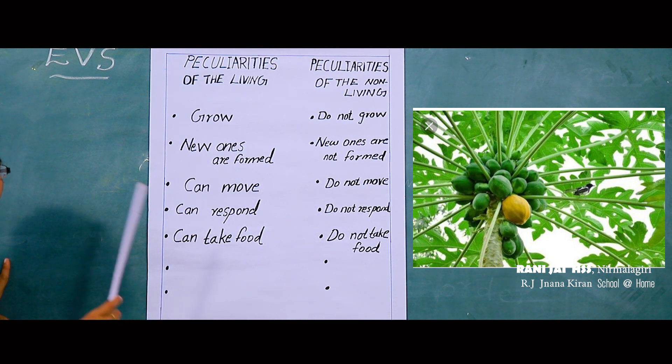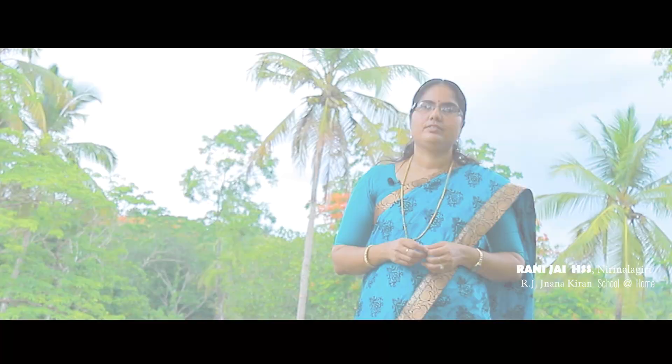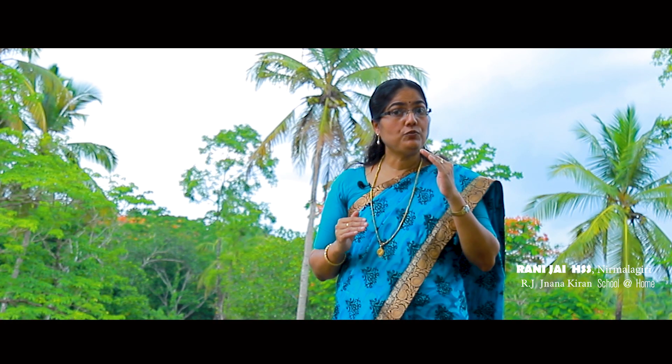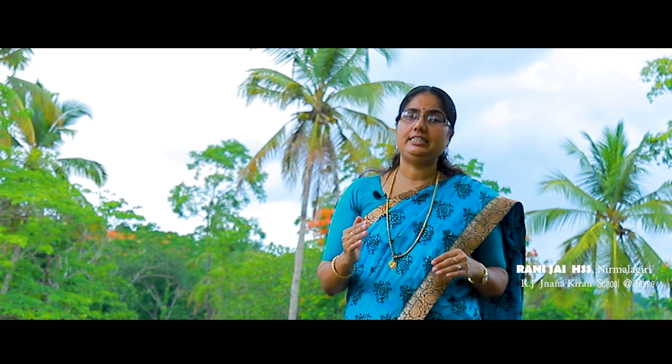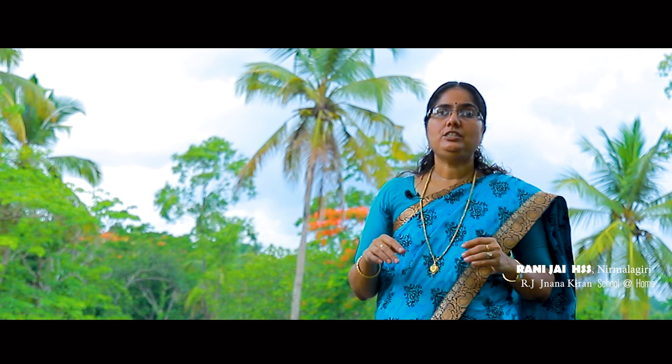Food is required for the growth of all living things. Just as we cook food in our kitchen, plants prepare their food in their leaves. The prepared food is used for their growth. The remaining food is stored by the plants in its different parts. See the picture of some plants we use for food and identify each one's name.